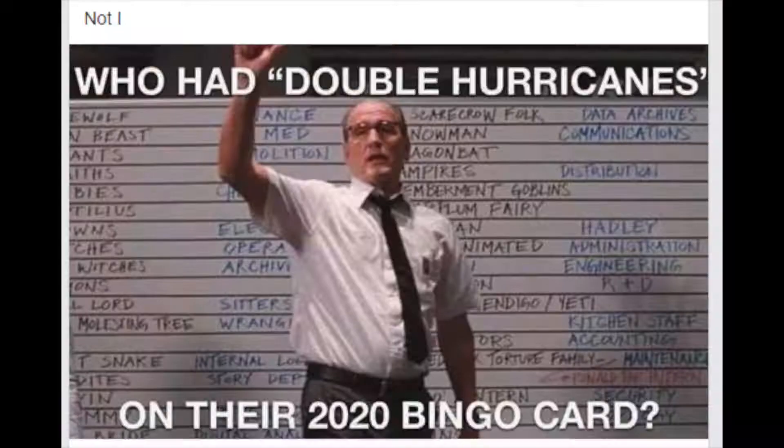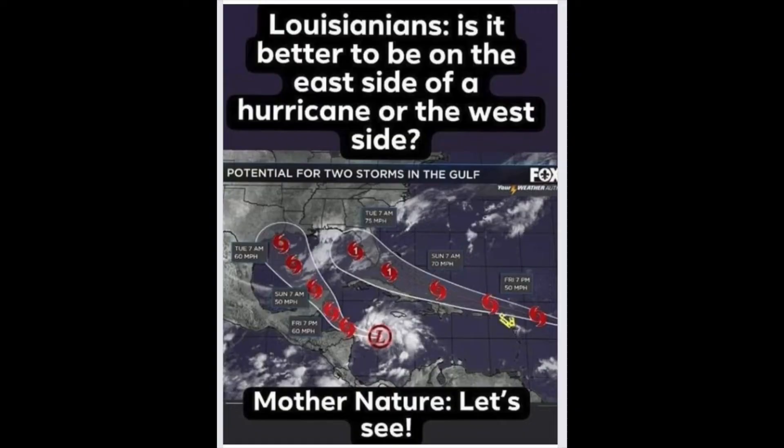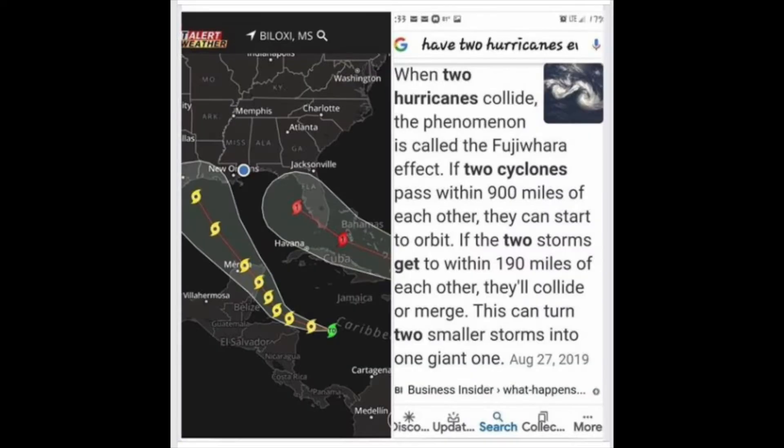Hey guys, Mr. Klein here. And as soon as I released my video on hurricane structure and function, two tropical systems seems to have decided to head on over this way to the northern Gulf Coast. So, as you could probably expect, the memes on Facebook — or as I like to call it, boomer Instagram — blew up about the Fujiwara effect.